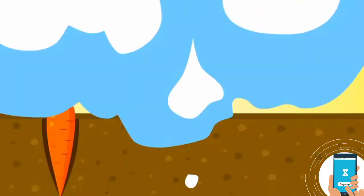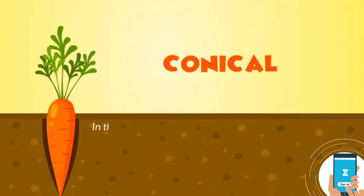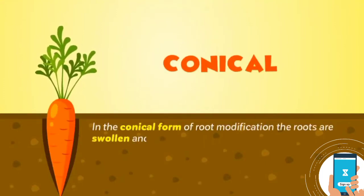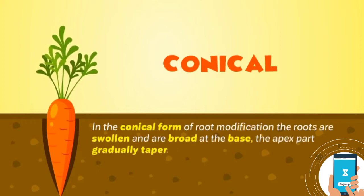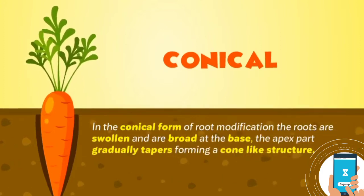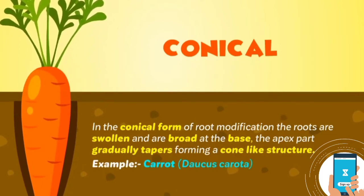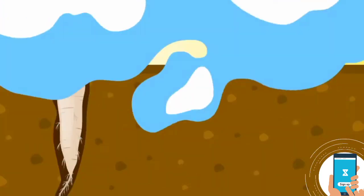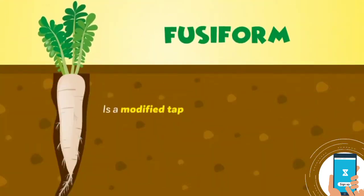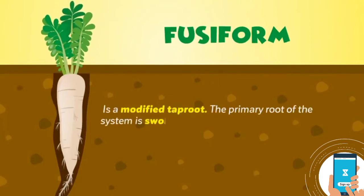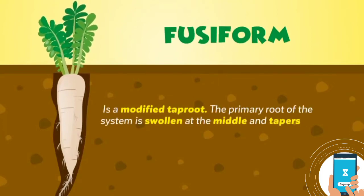Conical: in the conical form of root modification, the roots are swollen and broad at the base, and the apex gradually tapers, forming a cone-like structure. Example: carrot, Daucus carota. Fusiform: this is a modified taproot where the primary root is swollen at the middle and tapers gradually at both ends, forming a spindle-shaped structure.